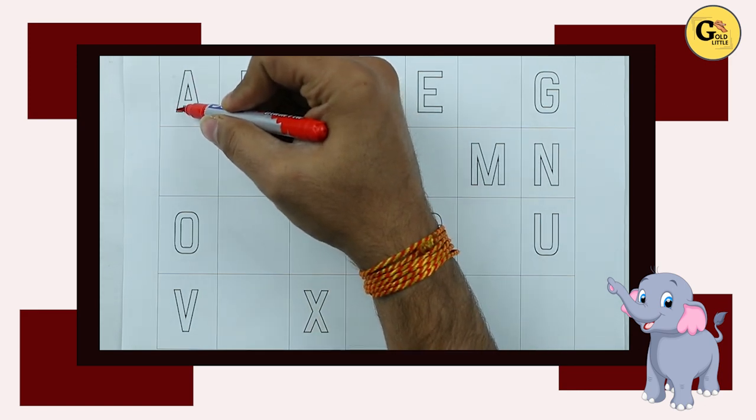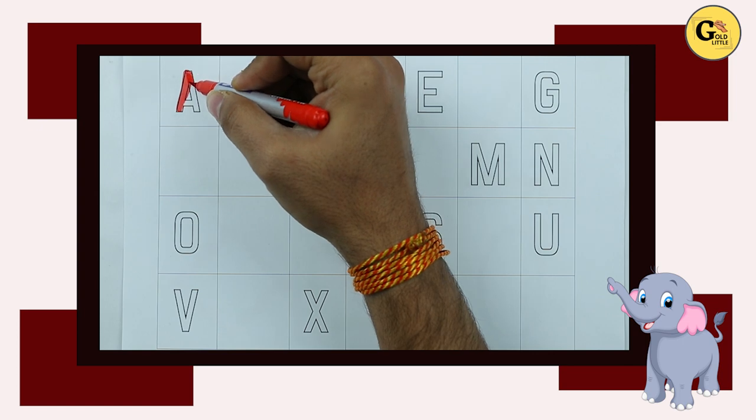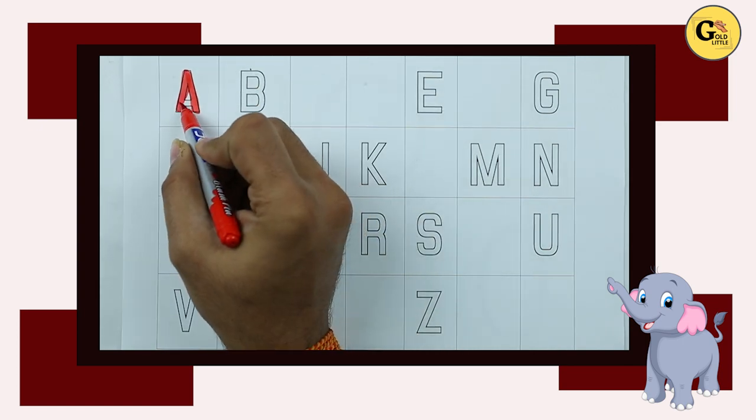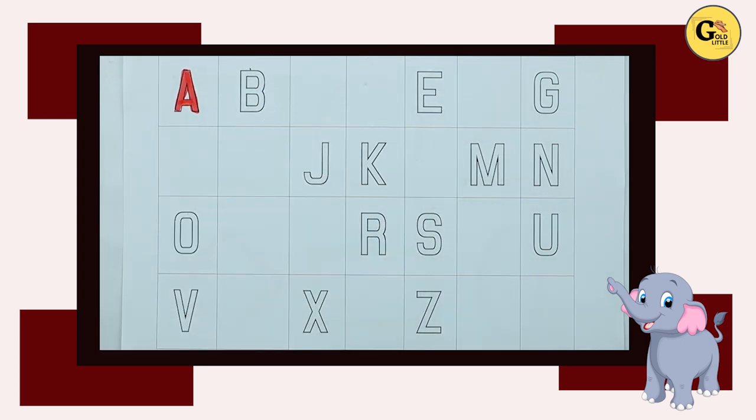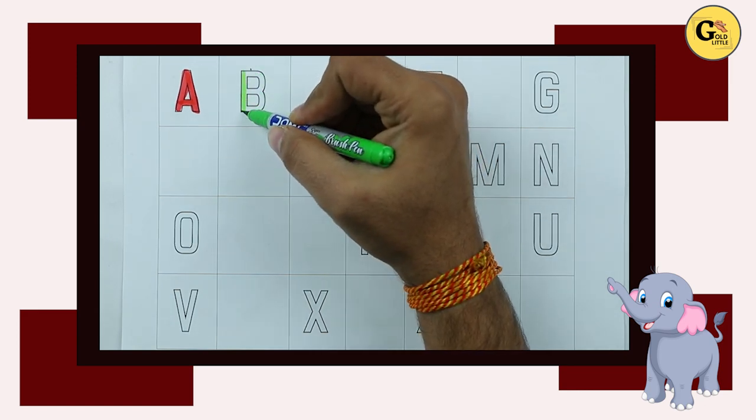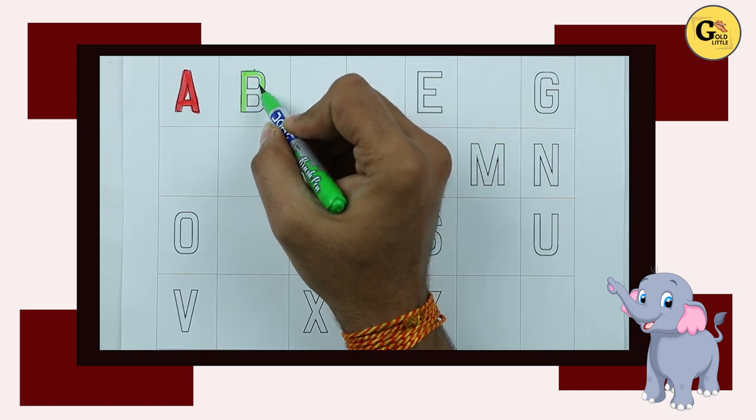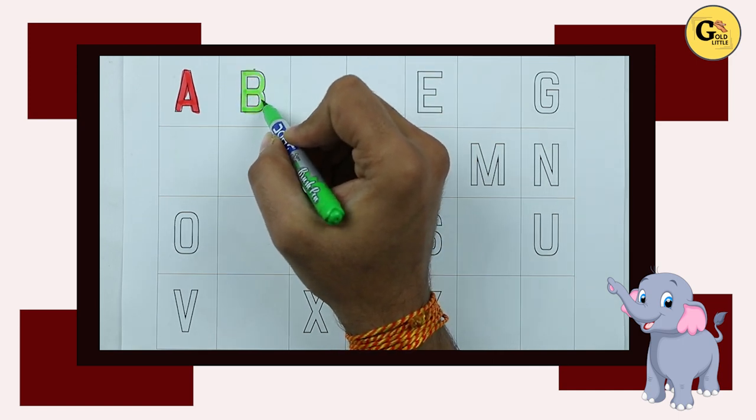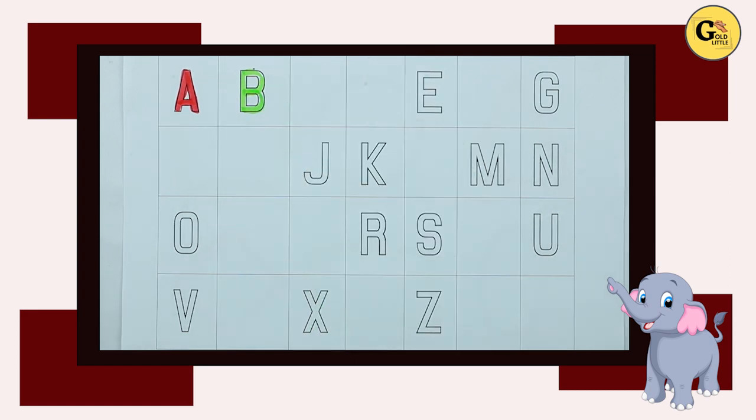A. A for apple with red color. A for apple. B. B for ball with green color.